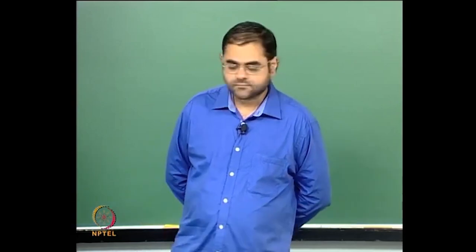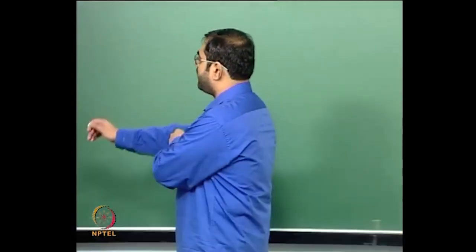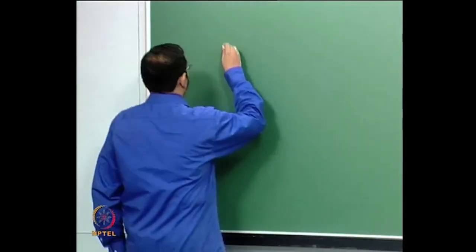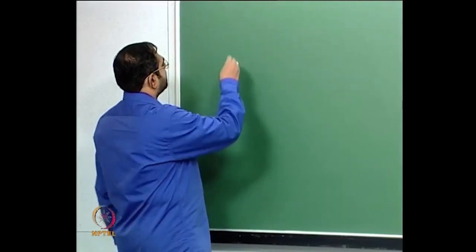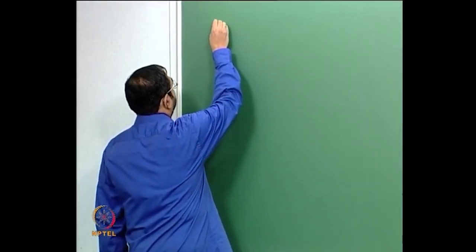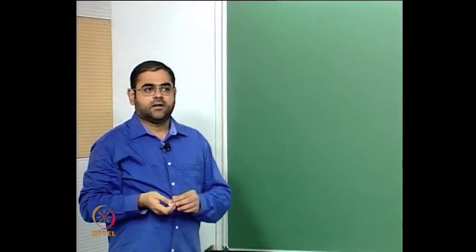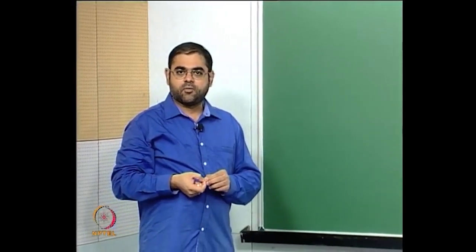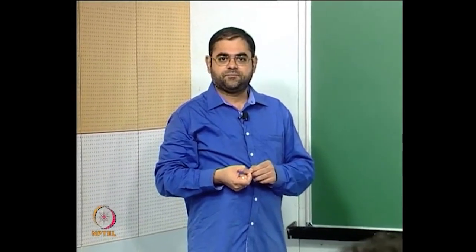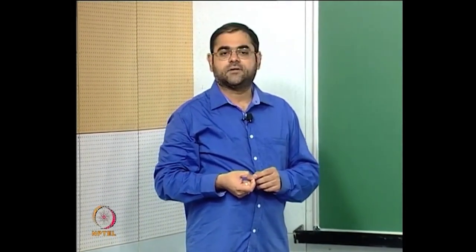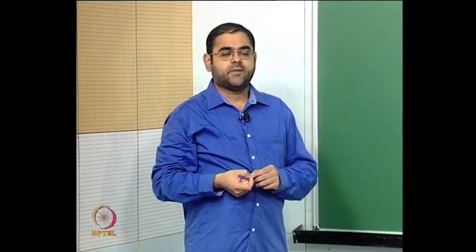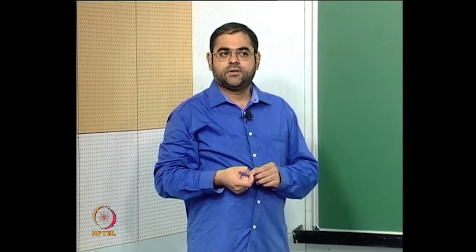Let us continue with our discussion about covering spaces. In the last lecture we looked at why the fiber over a point of the base space of the universal covering can be identified with the fundamental group based at that point.